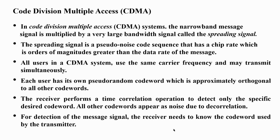In CDMA, the narrowband message signal is multiplied by a very large bandwidth signal called a spreading signal. This spreading signal is normally generated with the help of a pseudo-noise code sequence, which has a chip rate that is orders of magnitude greater than the data rate of the message. The resulting spread signal is called the code.